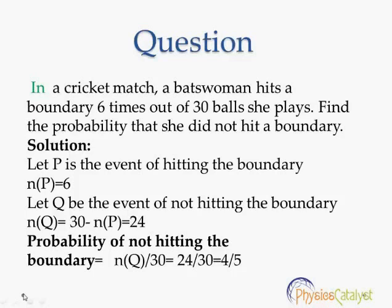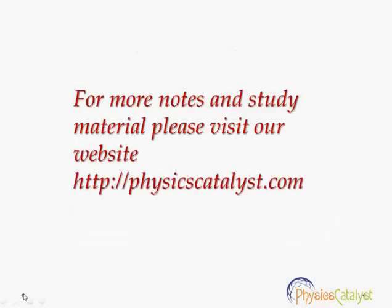Let Q be the event of not hitting the boundary. So number of trials where Q is happening is equal to 30 minus 6, equal to 24. So probability of not hitting the boundary equals number of trials where she is not hitting the boundary divided by total number of trials, which is 24 divided by 30, equal to 4 by 5.